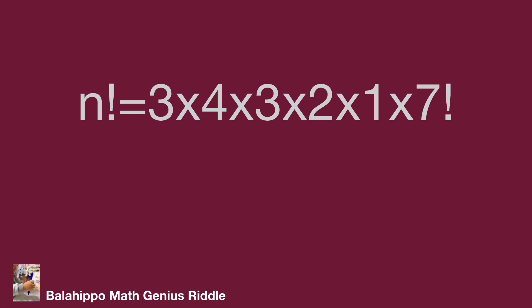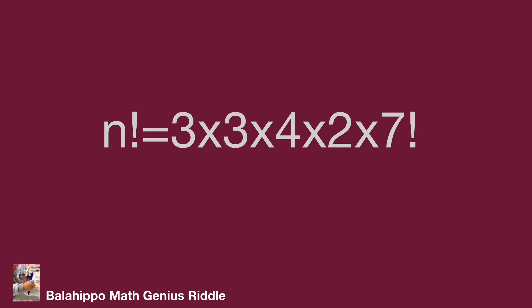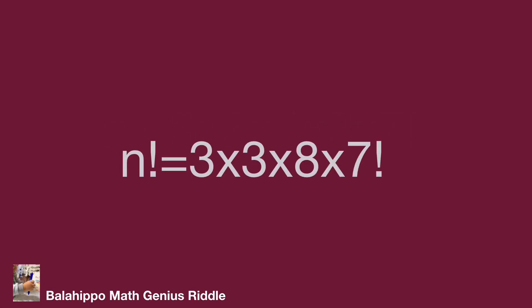n factorial should be larger than 7 factorial, then I'm going to generate a larger number factorial from 7 factorial. We know 8 factorial equals 8 times 7 factorial, so let's find the factor 8 in this equation. I find there is 4 and 2. 4 times 2 equals 8, so I adjust the sequence. n factorial equals 3 times 3 times 8 times 7 factorial, which equals 3 times 3 times 8 factorial.